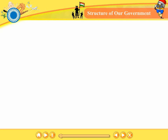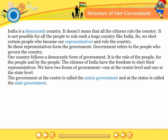The structure of our government. India is a democratic country. It doesn't mean that all the citizens rule the country. It is not possible for all the people to rule such a huge country like India. So we elect certain people who become our representatives and rule the country. These representatives form the government. Government refers to the people who govern the country.